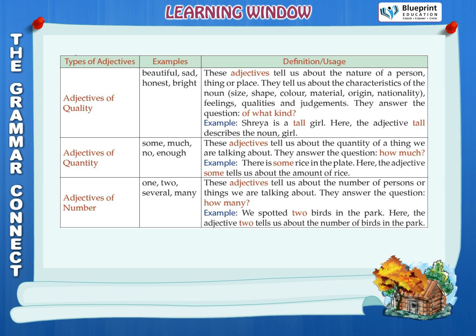Adjectives of quantity — examples: some, much, no, enough. These adjectives tell us about the quantity of a thing we are talking about. They answer the question: how much? Example: There is some rice in the plate — here the adjective 'some' tells us about the amount of rice.